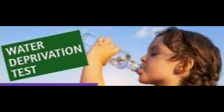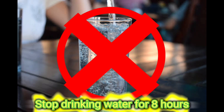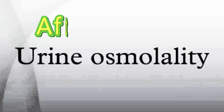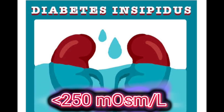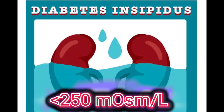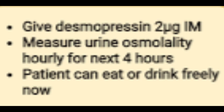In case of a normal serum sodium value, you have to run a water deprivation test. In this test, the patient is required to stop drinking water or juices for eight hours. If after eight hours the urine osmolality value is raised, then it is a clear case of psychogenic polydipsia. If it continues to be less than 250 milli-osmoles per liter, then it is a case of diabetes insipidus.